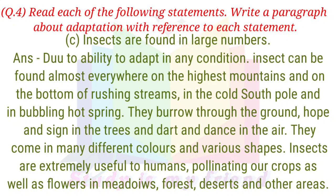C. Insects are found in large numbers. Answer: Due to their ability to adapt in any condition, insects can be found almost everywhere — on the highest mountains, at the bottom of rushing streams, in the cold South Pole, and in bubbling hot springs. They burrow through the ground, hop and climb in trees, and dance in the air. They come in many different colours and various shapes. Insects are extremely useful to humans, pollinating crops as well as flowers in forests, deserts, and other areas.